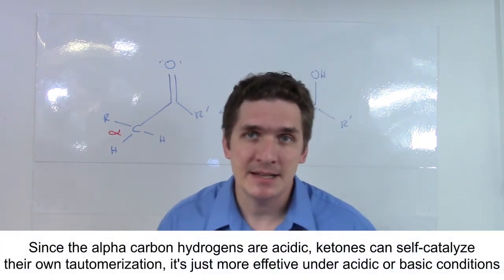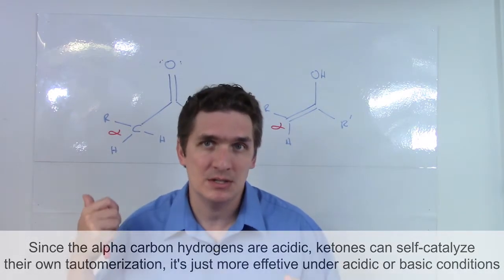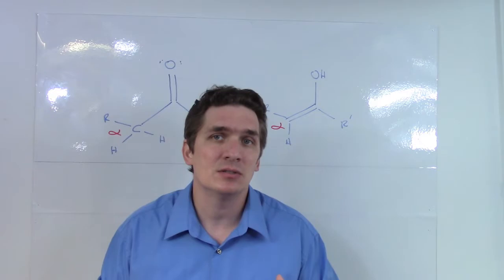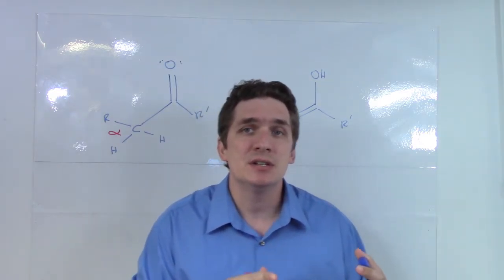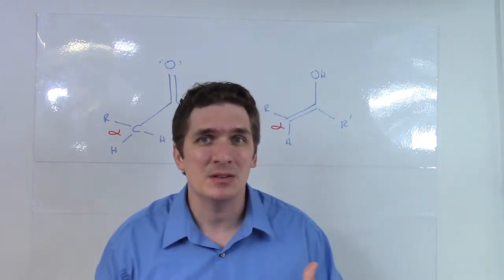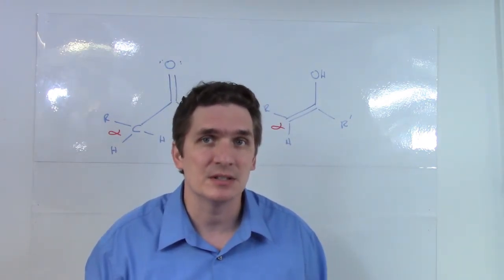If we do not supply an acid to our enol or ketone, but we do have an alpha carbon with hydrogen, they can catalyze their own reactions. This is going to be slower. When I say these are acidic, I mean that they're labile, but not very acidic. You're not going to see a massive pH jump. But even though you may not have supplied acid to the system, it will have the ability to undergo tautomerization, just at a much slower rate.